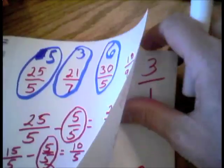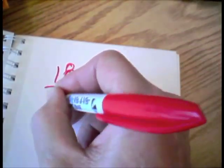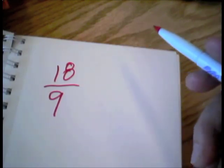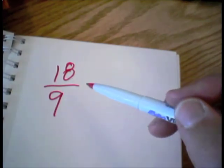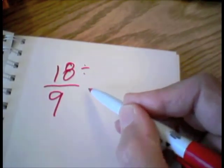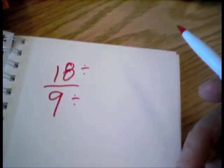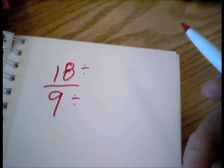Okay, 18 9ths. Now, you should be getting to the point where you're probably looking at 18 9ths and you're saying to yourself, huh, I think I know how to reduce that to a whole number, because I think I see the pattern here. What can we divide both 18 and 9 by and end up with an improper fraction that probably has a denominator of 1? In other words, it'll translate into an equivalent whole number.